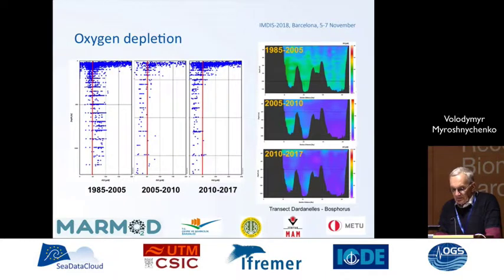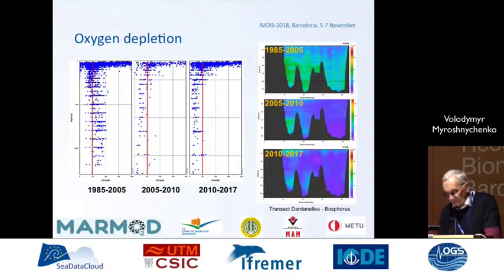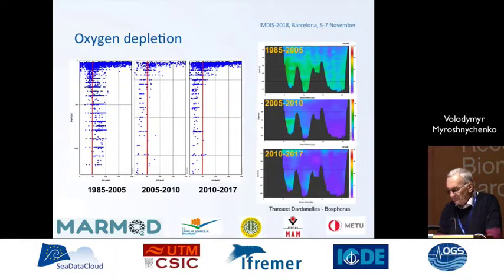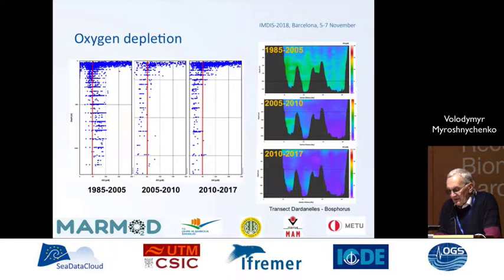There are some notable findings from the data. Regarding oxygen depletion in deeper waters: until 2005, the oxygen concentration in the deep waters of the Marmara Sea was above 50 micromoles. After that, it started to decrease sharply, suggesting a trend toward depletion.